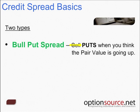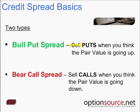When creating a credit spread, there are two types. The first is a bull put spread: we sell put options when we think the pair value is going to go up. When the pair goes up, those put options expire worthless and we collect the premium. The second is a bear call spread: we sell call options when we think the pair value is going to go down. We sell call options above the current price, and ultimately those call options expire worthless and we collect the premium.